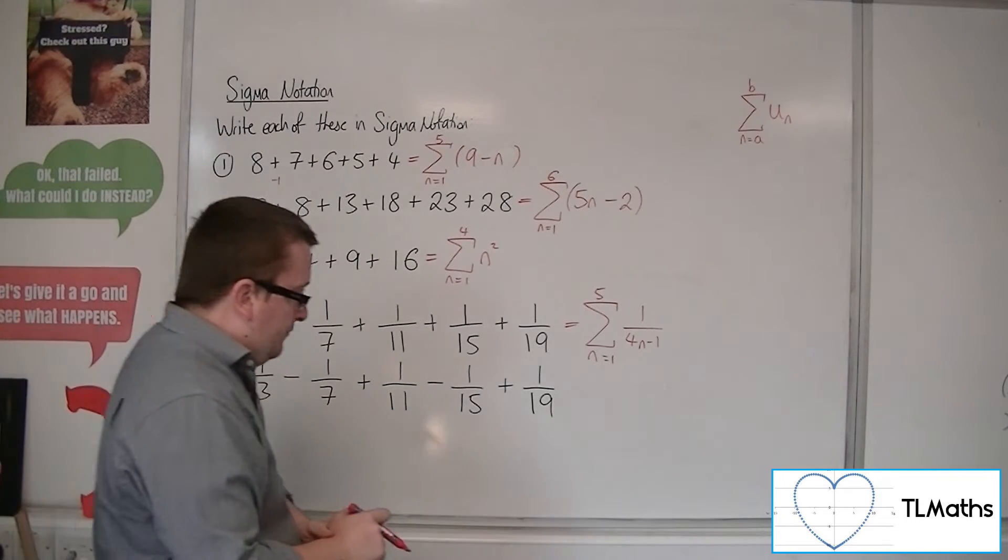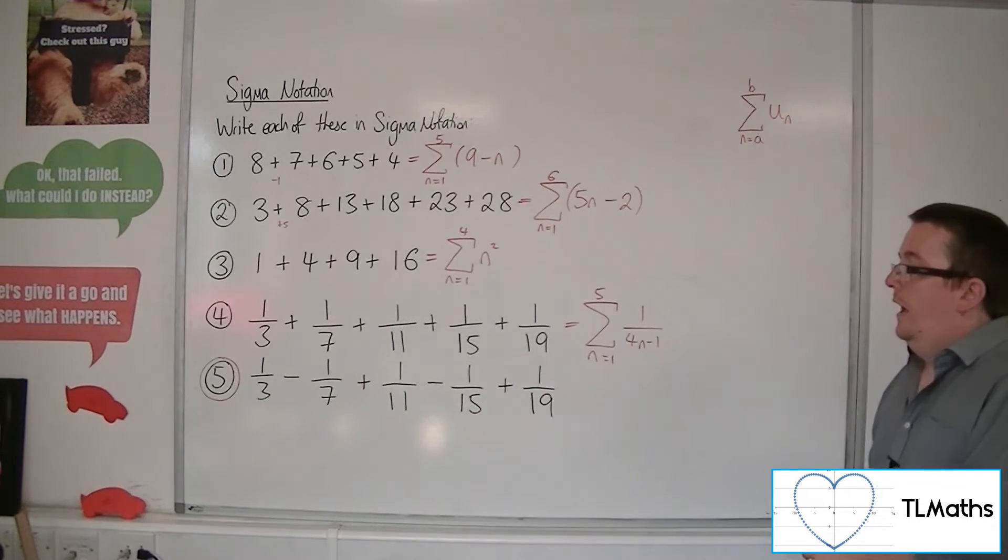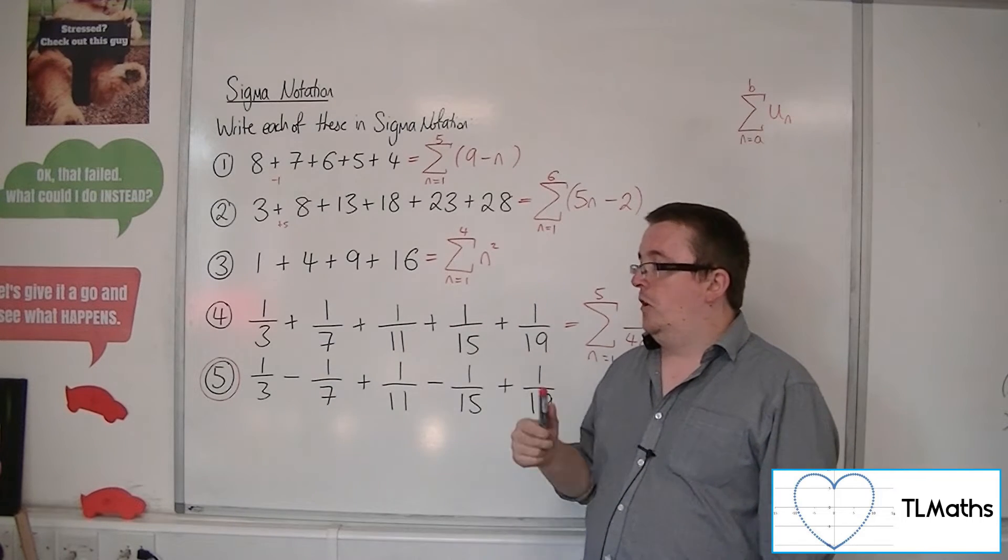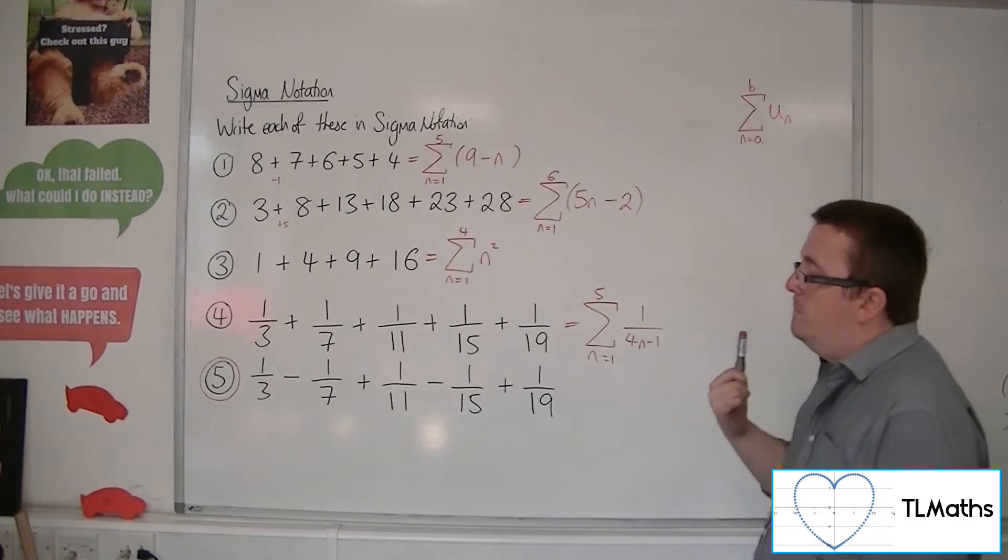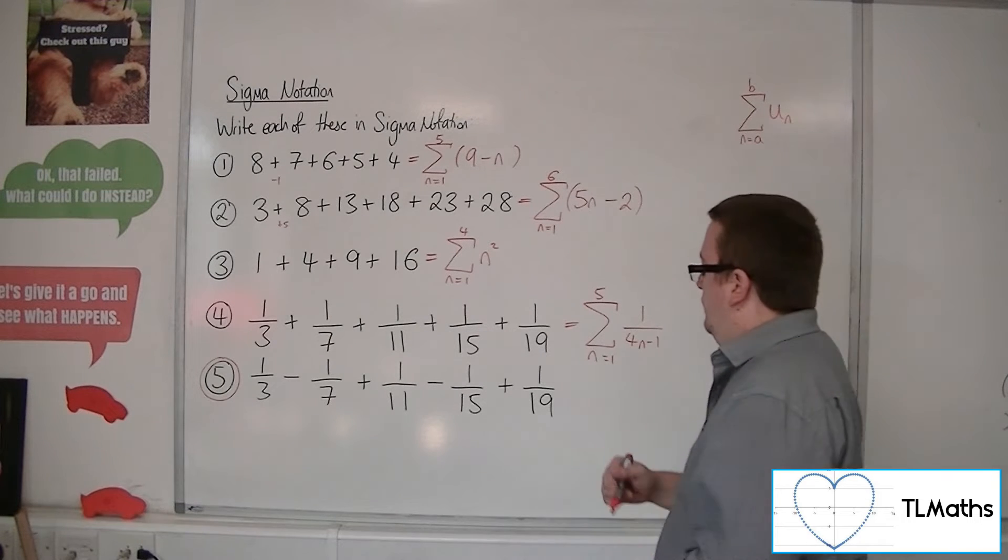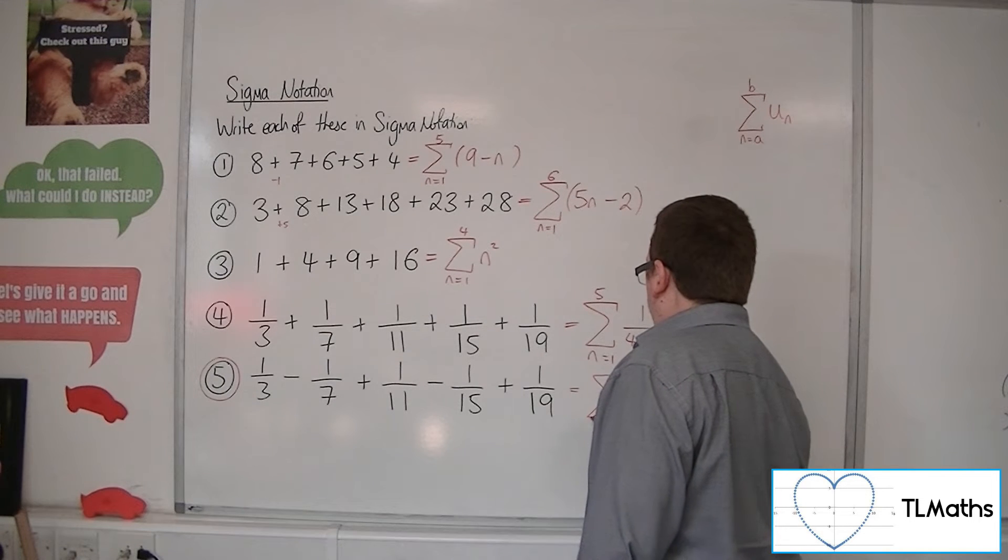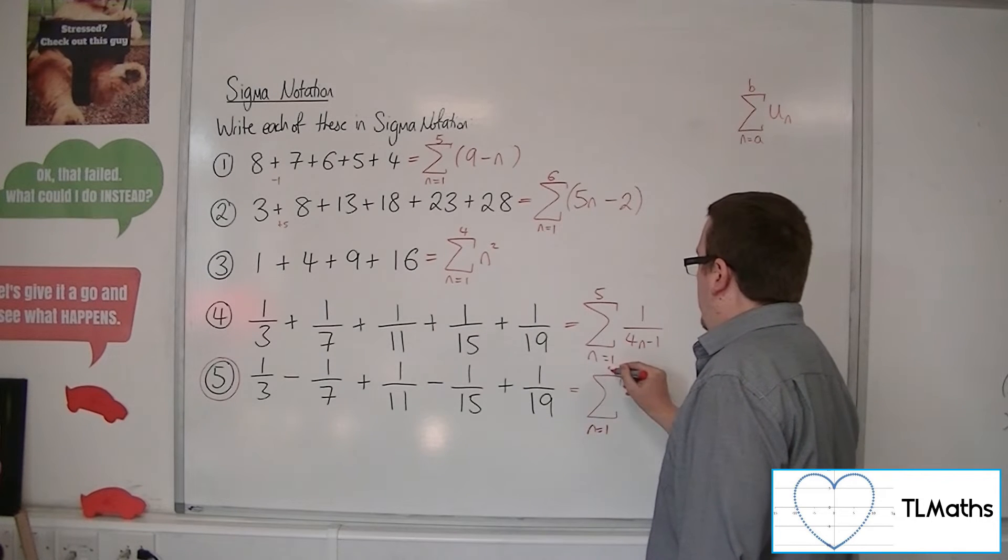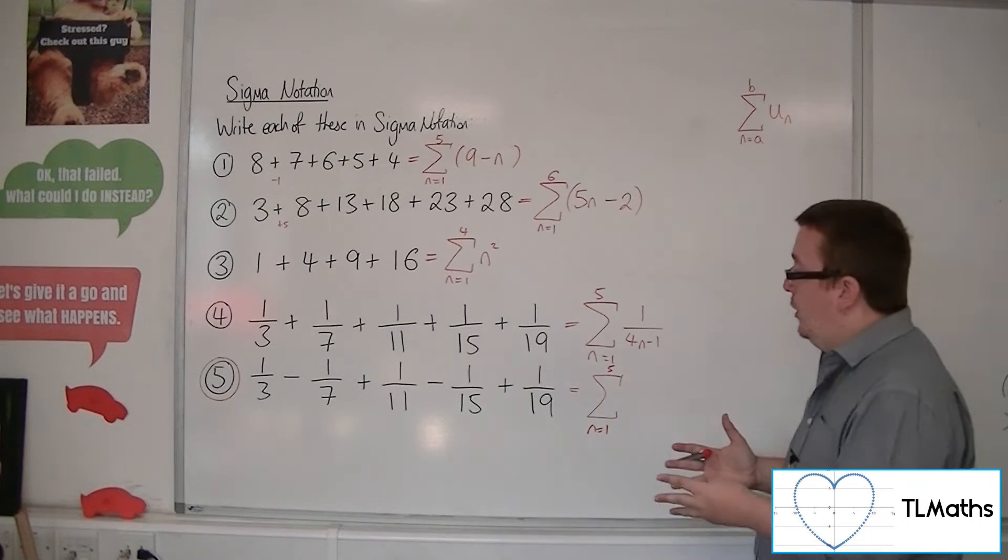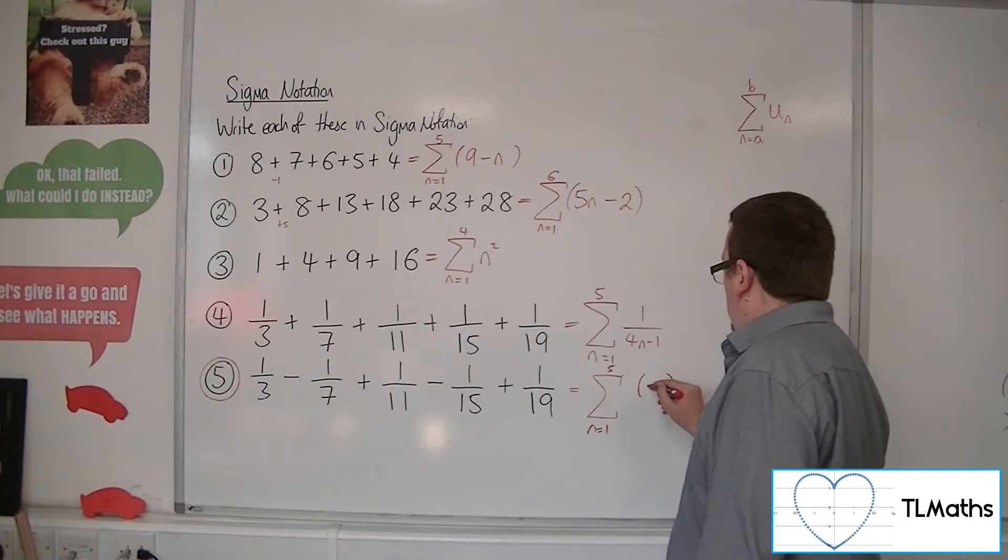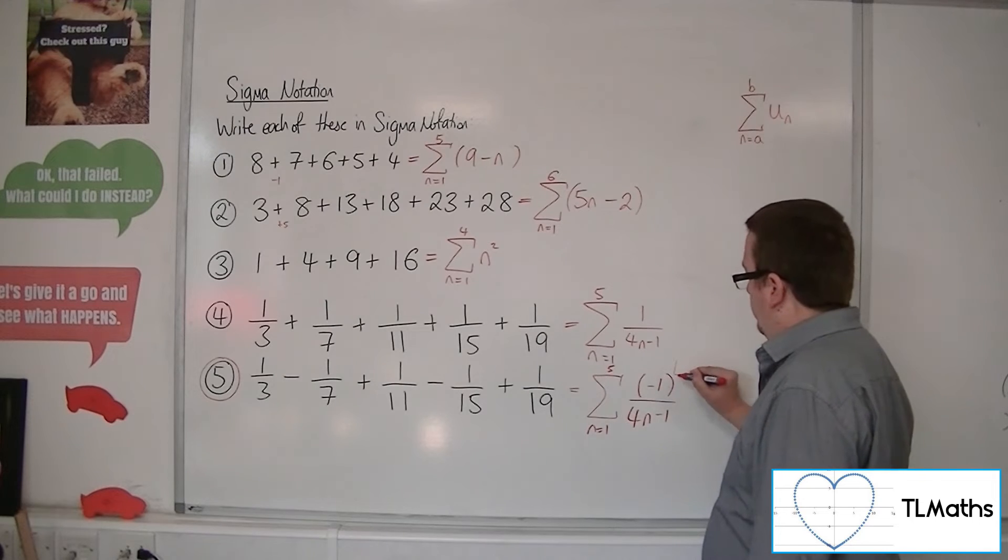Now number 5. I've circled number 5 in red because it's a little bit harder. Because now it's exactly the same sequence that we got in number 4. But we've now got these minuses. So 1 third minus 1 seventh plus 1 eleventh minus 1 fifteenth plus 1 nineteenth. So it'll look very similar to this one. However, what we've got to take account of are those minus signs. The easiest way to do that is to have in the numerator a minus 1 to the power of something.